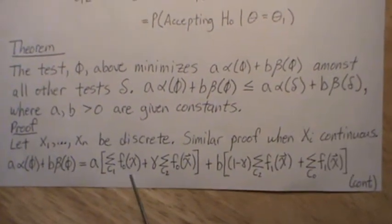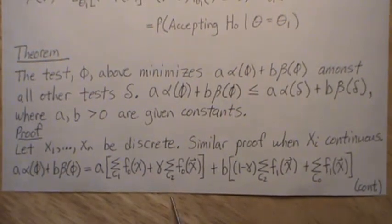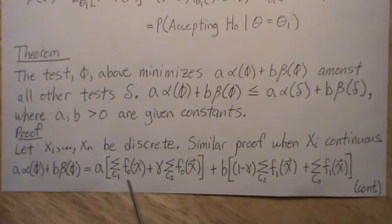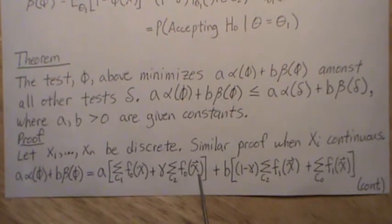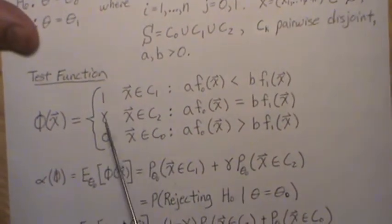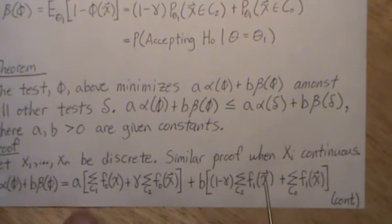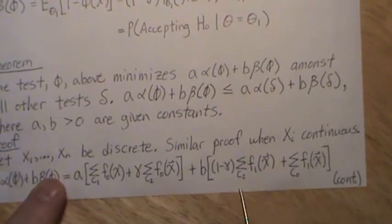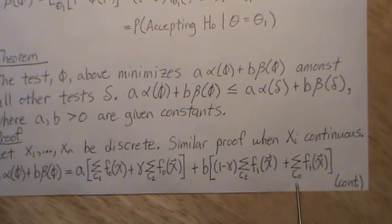This would be the probability of being in region C1. We just sum all those values. And this is the probability of being in region C2, but we have to take it times gamma. And then it's b times the probability of accepting H0 under the alternative, which is this. So we sum over region C2, all the x's in region C2 times one minus gamma, and then sum over all the region in C0.